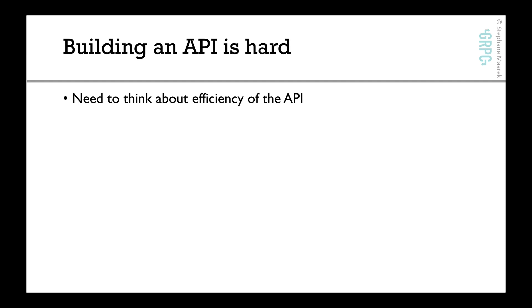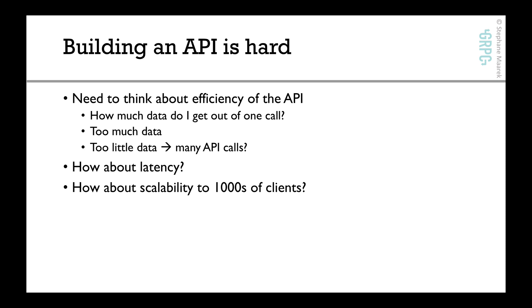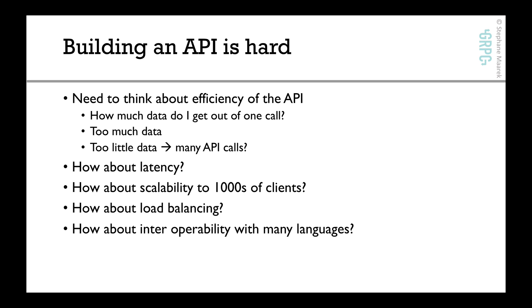You need to think about the efficiency of your API — how much data do I get out of one call? Is it too much data? Is it too little, in which case I'm placing too many API calls? You need to find the right balance. How about latency? How about scalability to 1000 clients? How about load balancing? How about interoperability between many languages? I just want to show you that building an API is complicated. And finally we can add authentication, monitoring, and logging — so much stuff to do.